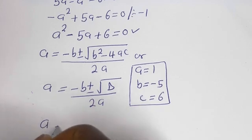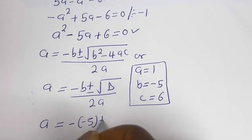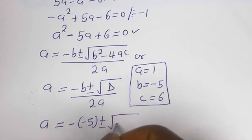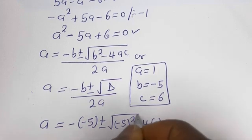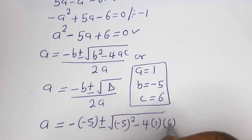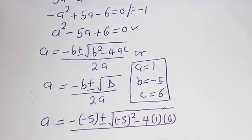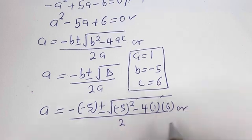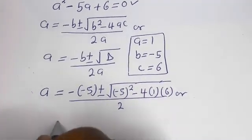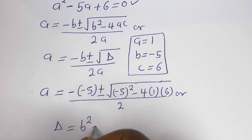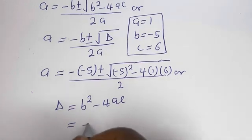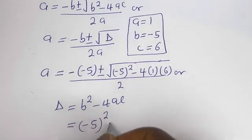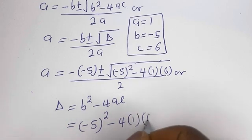Substituting into the formula: a is equal to minus (minus 5) plus or minus square root of (minus 5) squared minus 4 times 1 times 6, all over 2. The discriminant d is equal to b squared minus 4ac, which equals (minus 5) squared minus 4 times 1 times 6.